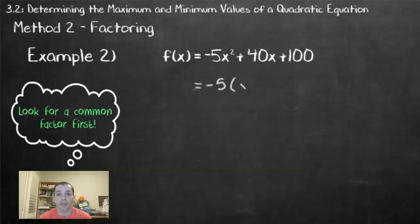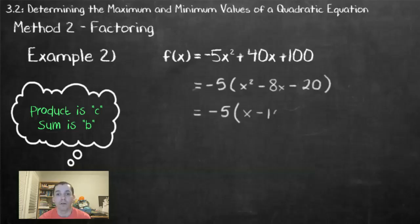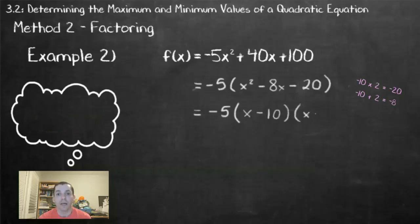When we're factoring this function, our first step is to look at that common factor of negative 5. By removing that common factor, I'm left with negative 5 and in brackets x squared minus 8x minus 20. As there's no a value, I can factor using my product and my sum, which in this case are negative 20 and negative 8 respectively. This gives me values of negative 10 and positive 2, which will factor into my binomials.